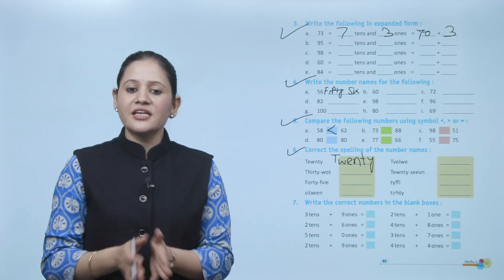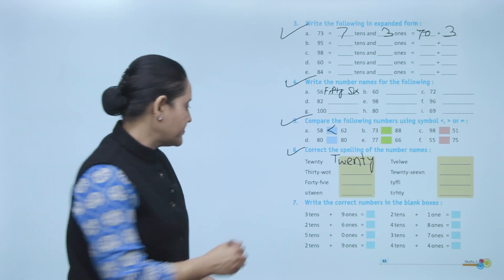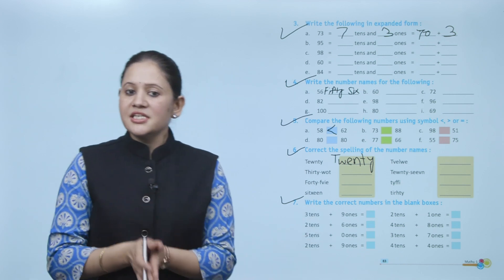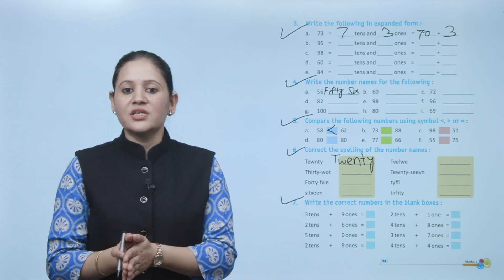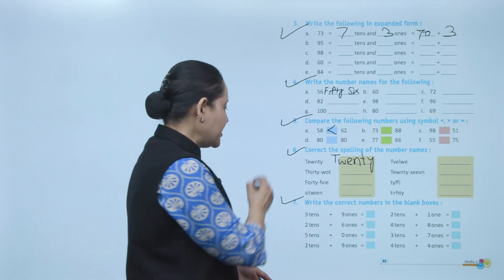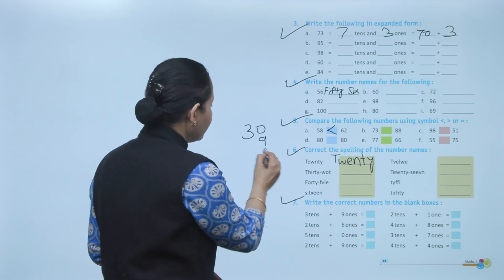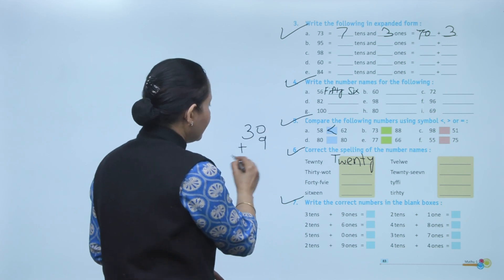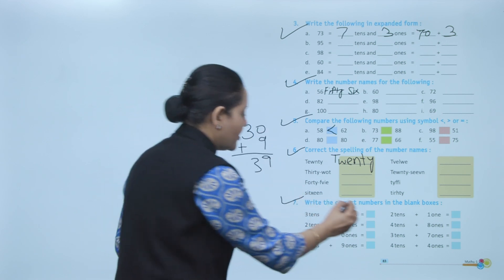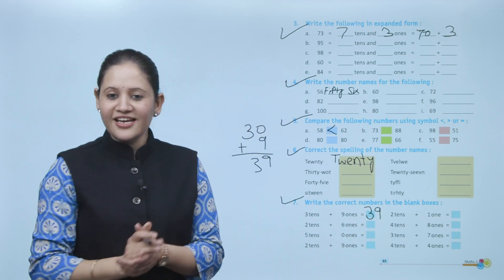Next, write the correct numbers in the blank boxes. 3 tens and 9 ones: 3 tens means 30, 9 ones means 9. 30 plus 9 equals 39. So our number is 39.